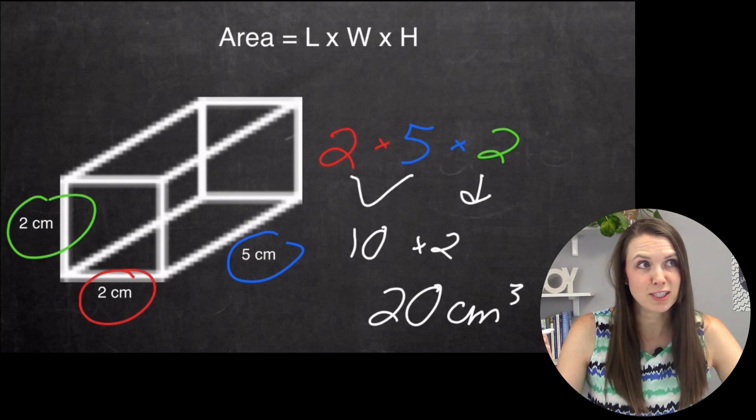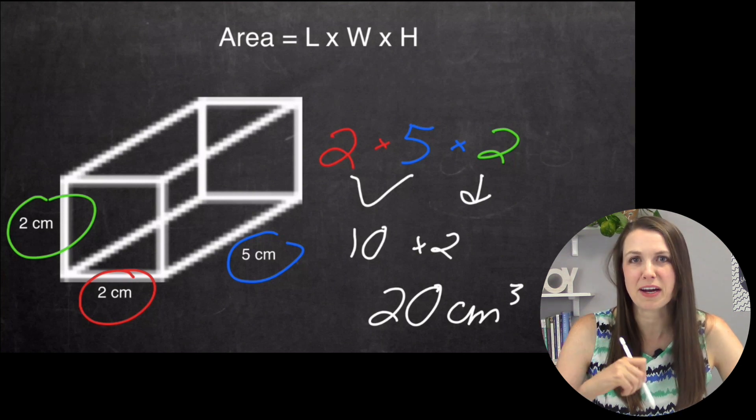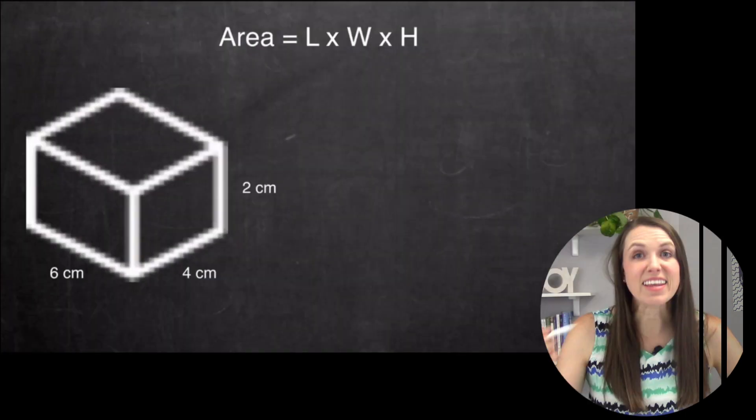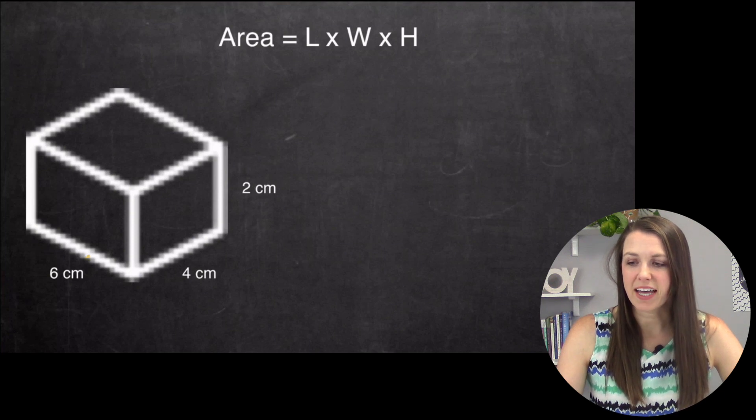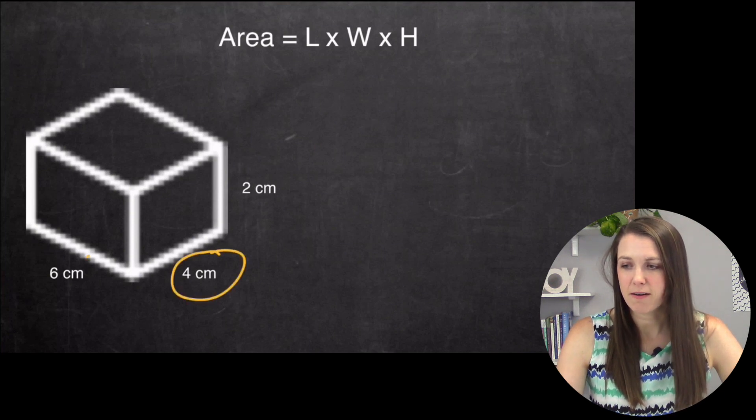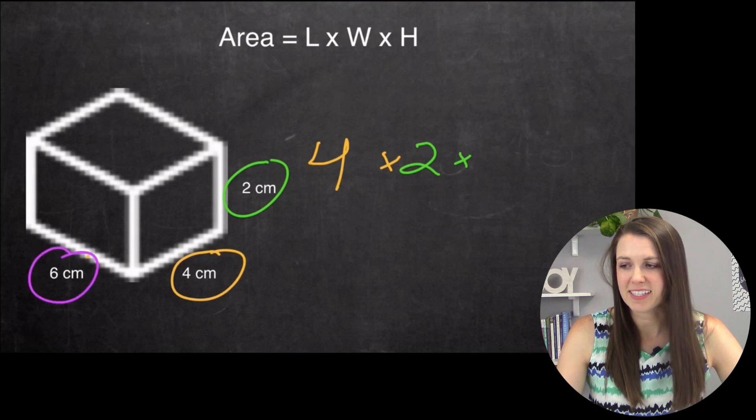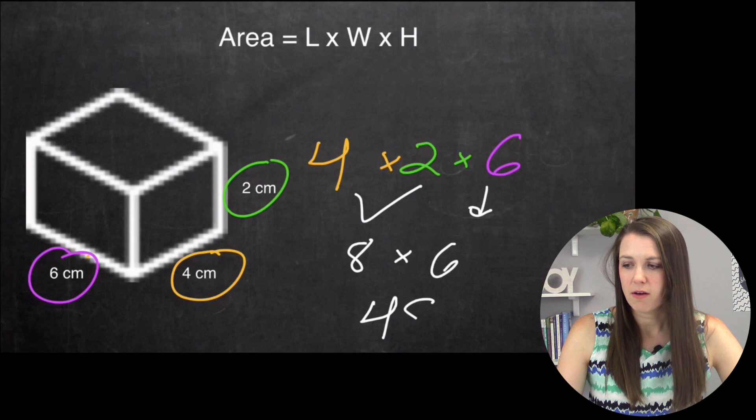Unfortunately, we can't just say two cubed or something because it's not a square. It is a rectangular prism and all the numbers aren't the same. On this one here, the numbers are actually all different. I have my length, which is four, times my height, which is two, times my width, which is six. So I have four times two, which is eight, bring down my six, eight times six is 48.